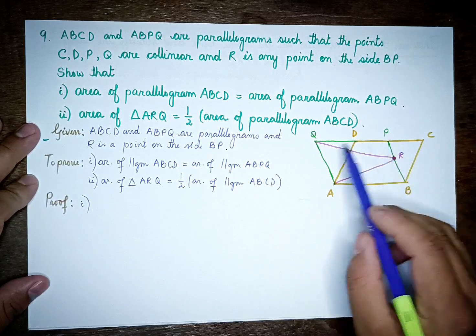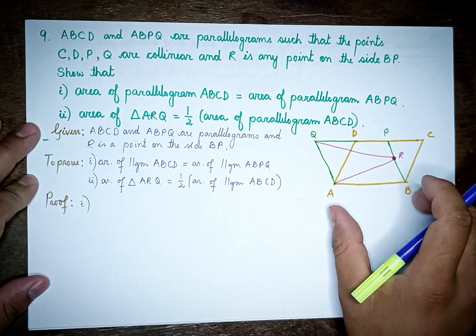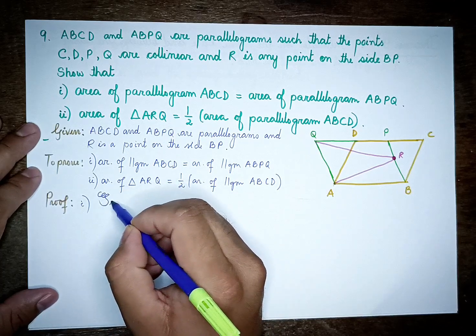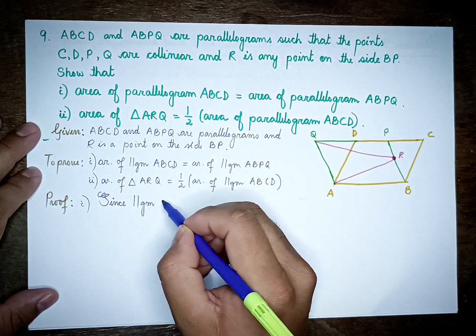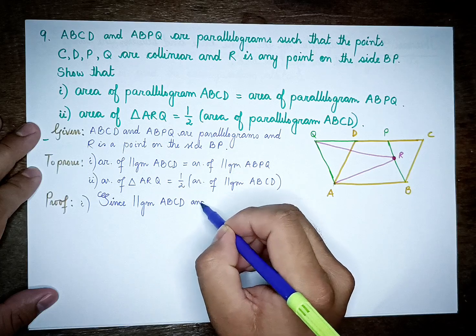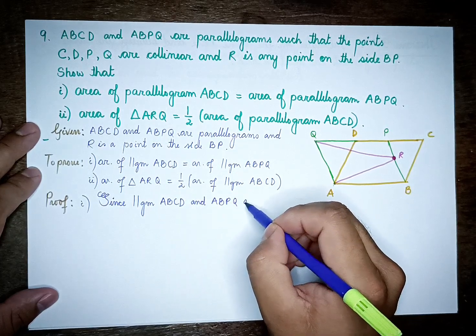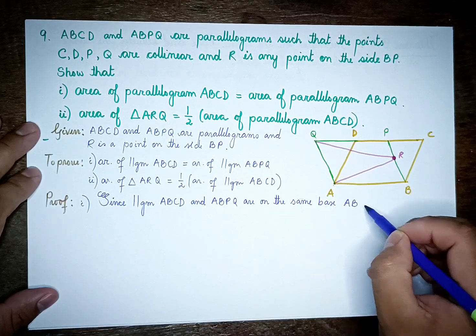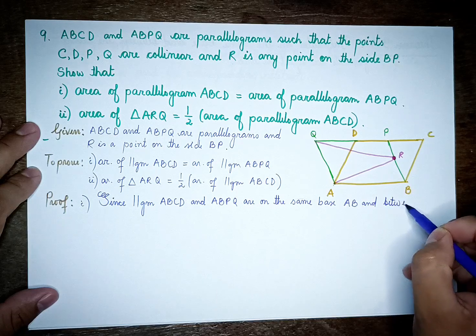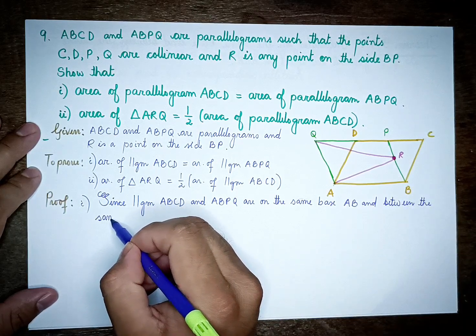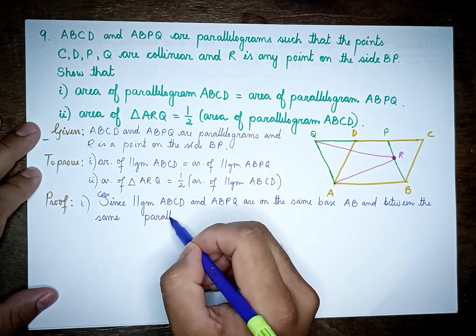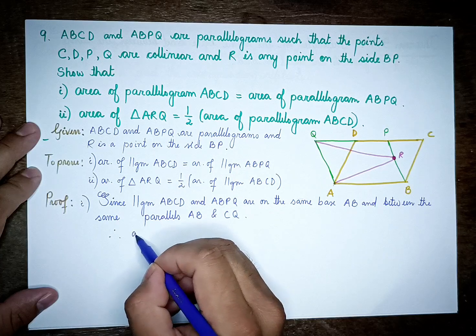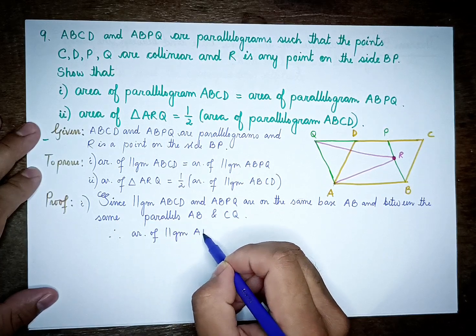Since parallelograms ABCD and ABPQ are on the same base AB and between the same parallels AB and CQ, therefore area of parallelogram ABCD equals area of parallelogram ABPQ.